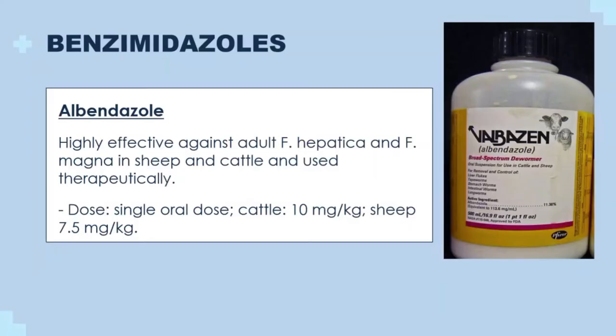An example of a benzimidazole is albendazole. In sheep and cattle, it is highly efficient against adult Fasciola hepatica and Fascioloides magna, and it is used therapeutically. Albendazole dose — single oral dose: in cattle, 10 mg per kg, and in sheep, 7.5 mg per kg.